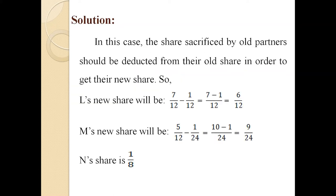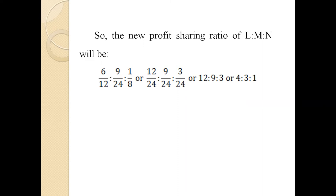Solution: the share sacrificed by the old partners should be deducted from their old share to get their new share. L's new share: 7/12 − 1/12 = 6/12. M's new share: 5/12 − 1/24 = 9/24. N's share is 1/8. So the new profit sharing ratio of L : M : N is 6/12 : 9/24 : 1/8. Converting all denominators to 24 gives 12 : 9 : 3, or simplified 4 : 3 : 1.